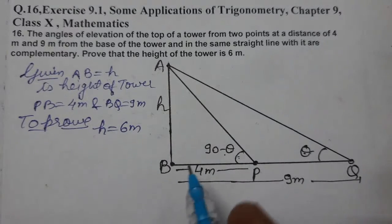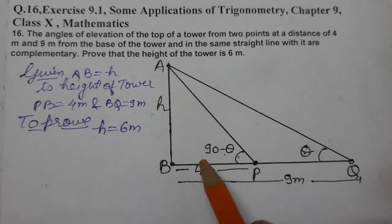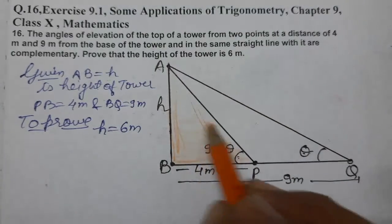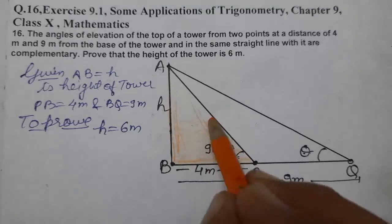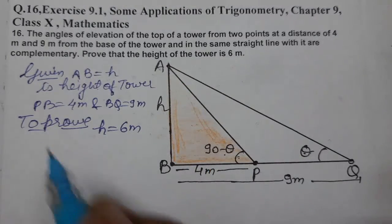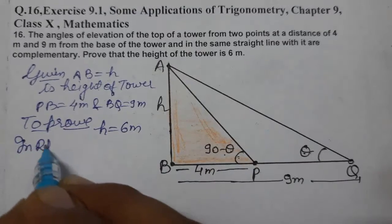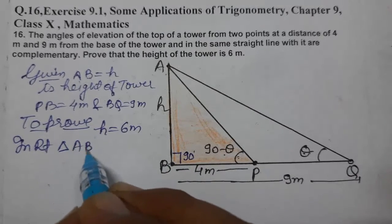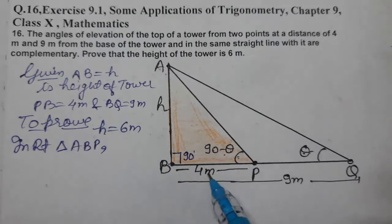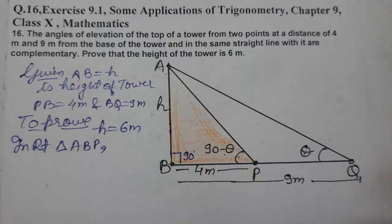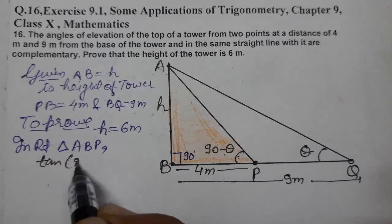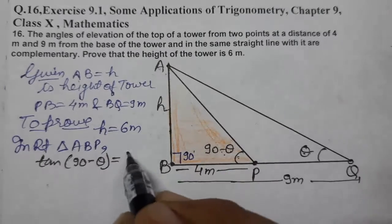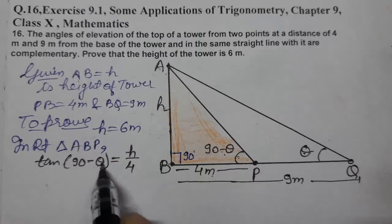We will consider the triangles one by one. First we will take this triangle. In right triangle ABP, tan of 90 minus theta equals perpendicular over base, which equals h over 4. So cot theta equals h upon 4, equation number 1.